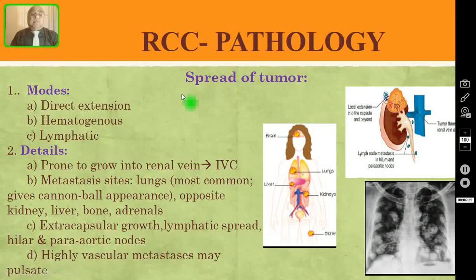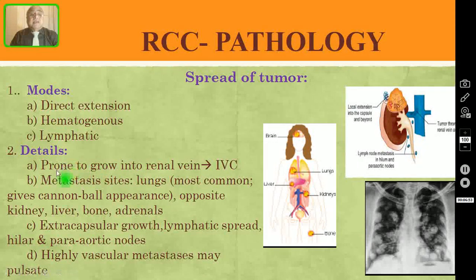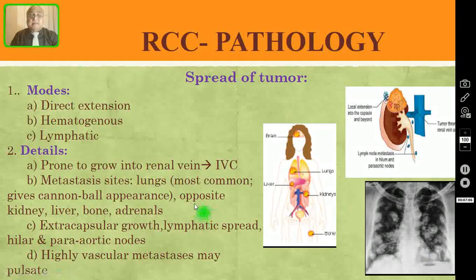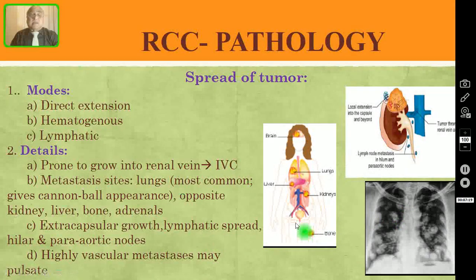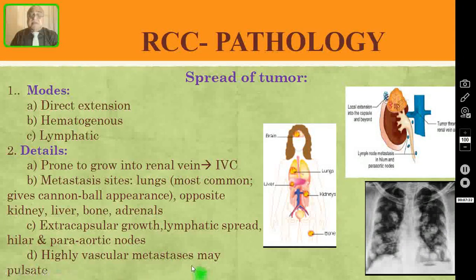Coming to the spread of the tumour: the modes of spread are direct extension, haematogenous spread, or lymphatic spread. A special feature is that these tumours are prone to grow into the renal vein and eventually spread to the IVC. Haematogenous spread goes especially to the lungs, opposite kidney, liver, bone, and adrenals. Local invasion may go to adjacent nearby organs beyond Gerota's fascia. Lymphatic spread goes to the hilar lymph nodes and then to the para-aortic lymph nodes. Metastases are highly vascular and may even pulsate — here you can see the characteristic cannonball appearance in the lungs.